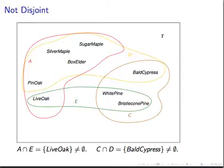This captures the idea of a collection of sets, none of which have any overlap with each other. The sets shown here are not pairwise disjoint, since several of them have overlaps.